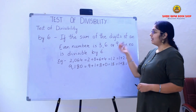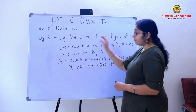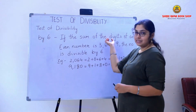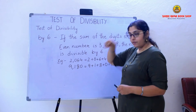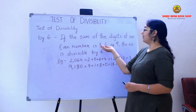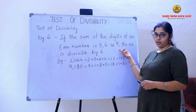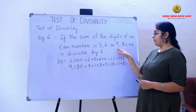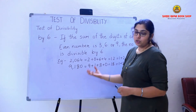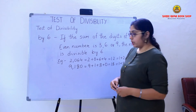So when the digits are added of an even number, we should get the answer as 3, 6, or 9 when you add them. Then we can say that the number we have taken is divisible by 6.